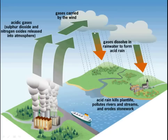When the rain falls, it falls carrying all these acids — it falls as acid rain — and that has some pretty significant consequences for all sorts of things. Acid rain kills plant life, so let's have a little look at that.